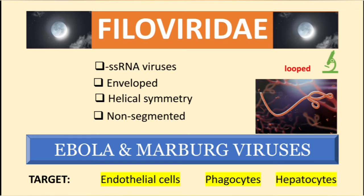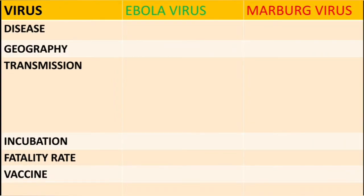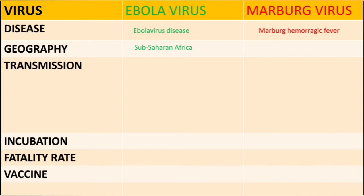Now I am going to describe these two viruses in the form of a comparison. The disease caused by the Ebola virus is called Ebola Virus Disease, and the one caused by the Marburg virus is called Marburg Hemorrhagic Fever. In terms of geographical distribution, the Ebola virus is mainly found in sub-Saharan Africa, whereas the Marburg virus is found in Africa in general — with examples like Zimbabwe, Uganda, and the Democratic Republic of Congo.